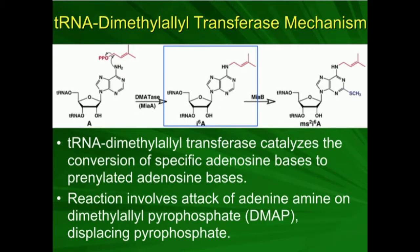tRNA dimethylallyl transferase takes the molecule dimethylallyl pyrophosphate and transfers the dimethylallyl group onto adenine's amine in a simple SN2 mechanism — the amine attacks the carbon, with loss of pyrophosphate. This gives a prenylated adenine, specifically with a 5-carbon dimethylallyl group attached. In some organisms, this position on adenine can be further processed to add a thiomethyl (thioether) group, though not all organisms do this.